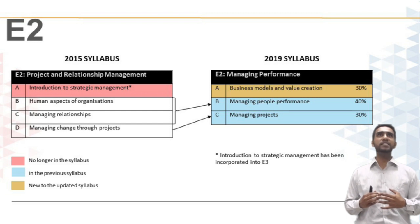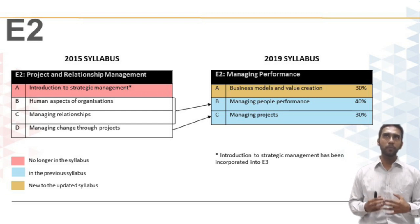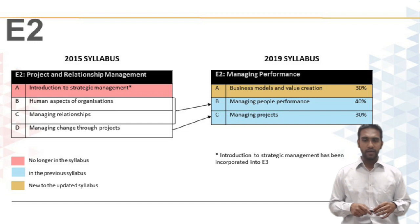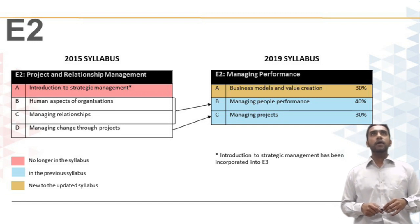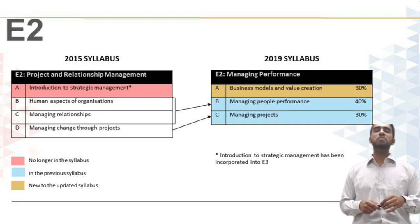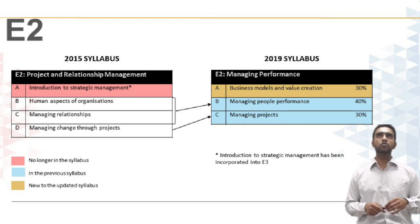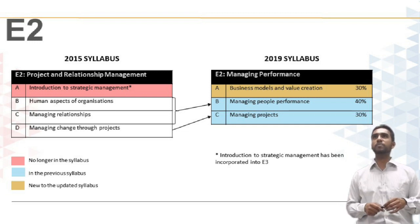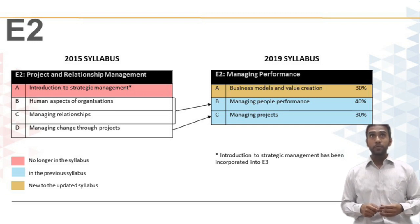All the other topics still remain within the syllabus, where topics B and C have been merged into one topic with a larger weightage. Human aspects of organizations and managing relationships have been merged into managing people performance, which is now 40% of the syllabus.